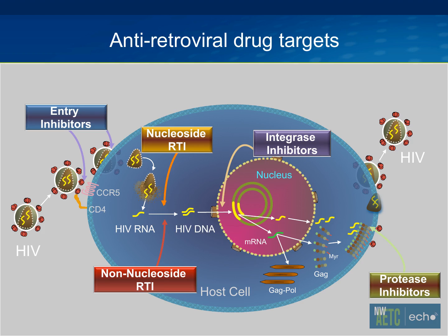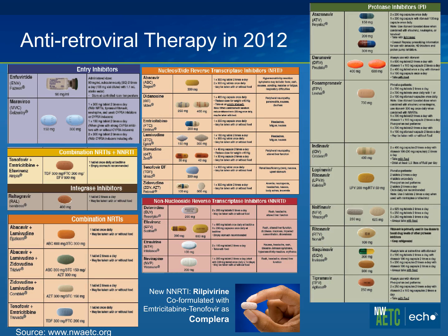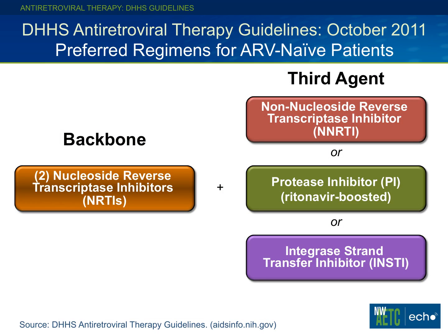Moving on to what to start, we'll discuss treatment-naive patients and some newer agents. We now have five classes of antiretroviral drugs — the three original classes plus integrase inhibitors and entry inhibitors developed in the last five years — totaling about 30 individual agents. The newest on the scene is rilpivirine, co-formulated with emtricitabine and tenofovir as Complera. The reality is that things are much more simple than the full drug chart suggests.